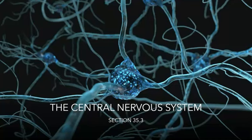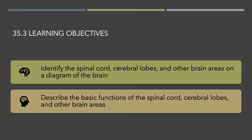Welcome to this video lecture on section 35.3 on the Central Nervous System. In this section, we hope to achieve the learning objectives of identifying the spinal cord, cerebral lobes, and other brain areas on a diagram of the brain, and describing the basic functions of the spinal cord, cerebral lobes, and other brain areas.